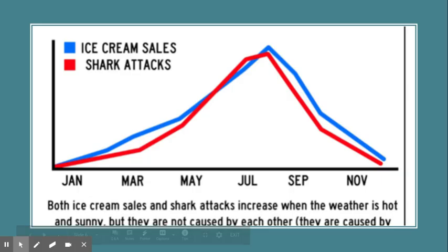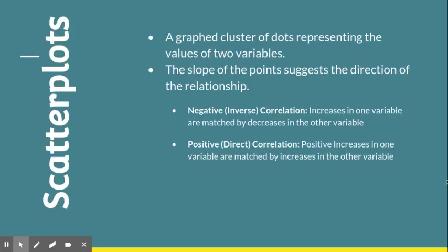Now let's talk about how we interpret a correlation — how do we get the data to see what kind of relationship there is. It's best to graph it out. A scatter plot is the type of graph we use to look at a correlation. A scatter plot is a graphed cluster of dots that represent the values of two variables, and we look to see: as one increases, does the other increase or decrease?